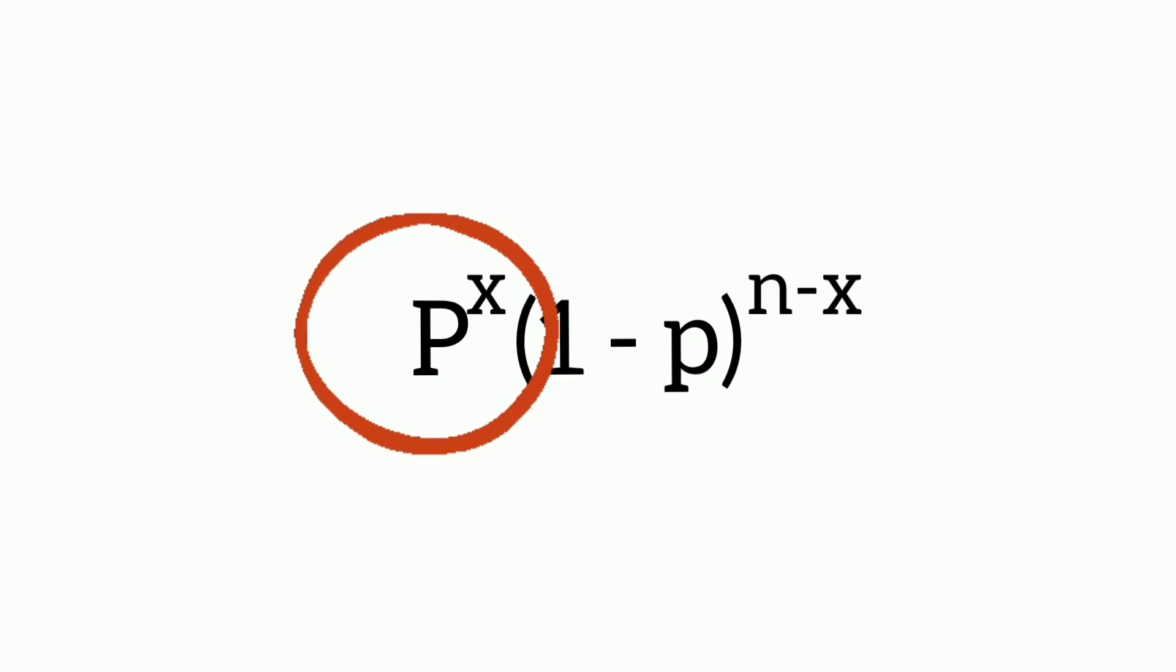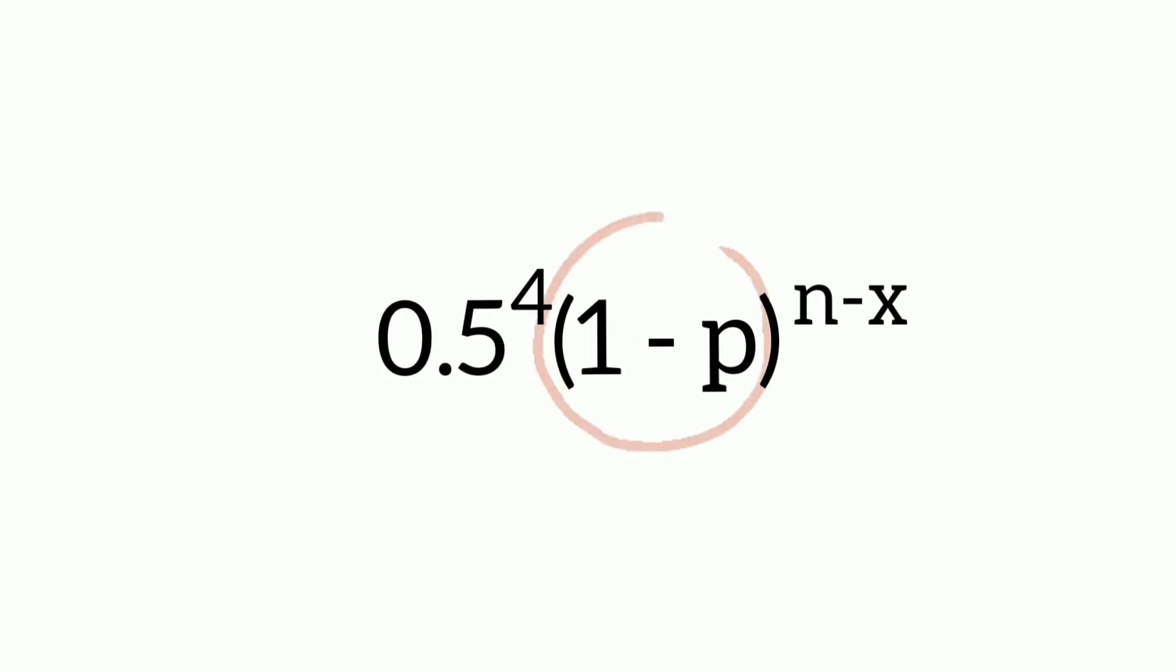p to the power of x is the probability that month 7 to 12 was visited by more people four out of five times. So it is written as 0.5 to the power of 4. While 1 subtracted by p to the power of n subtracted by x corresponds to someone that visited the site on the months 1 to 6.